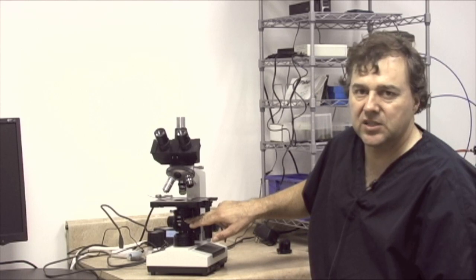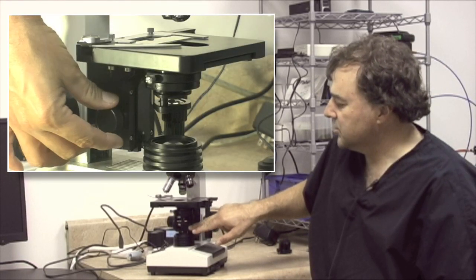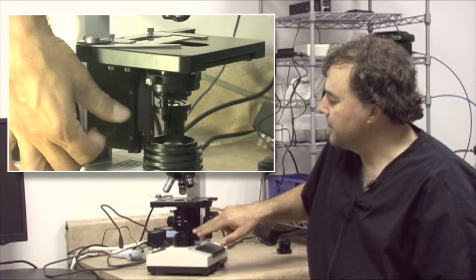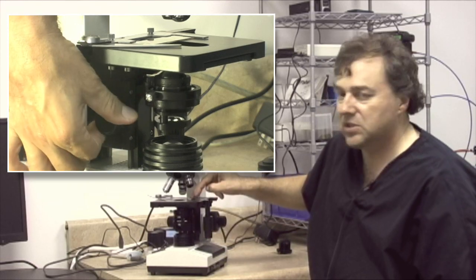Directly beneath the stage is the condenser. The purpose of the condenser is to gather light that's coming from the lamp and focus it on the specimen.